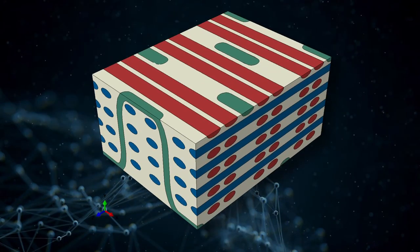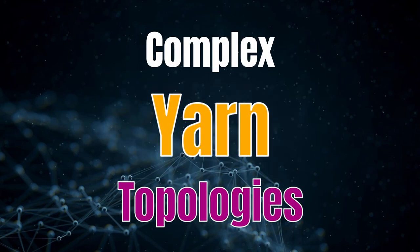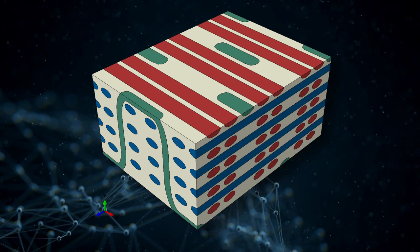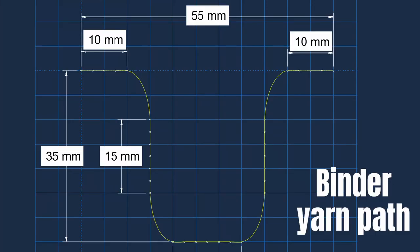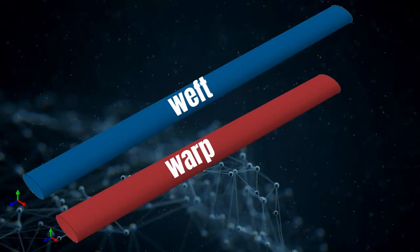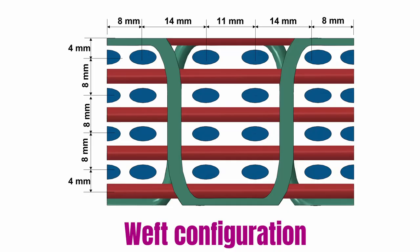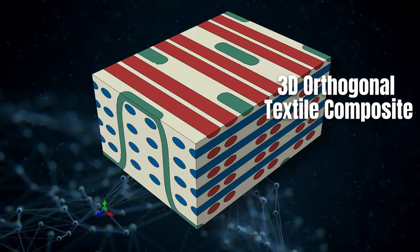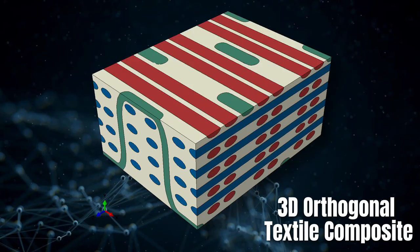Representative volume elements of textile composites can be quite challenging to develop, mainly due to the complex yarn topologies. In this video, I will show you the detailed steps to creating such an RVE, beginning with a sketch of the binder yarn path, to the design of the weft and warp yarns, then the design of the matrix and the eventual creation of the distinctive RVE of the 3D orthogonal composite. Let us sit back and relax as we get started with this modeling.